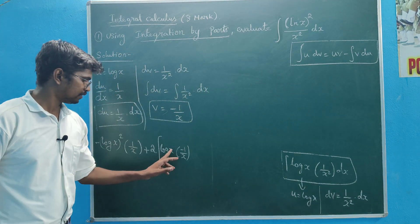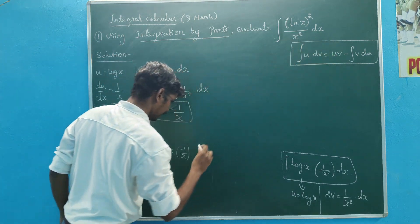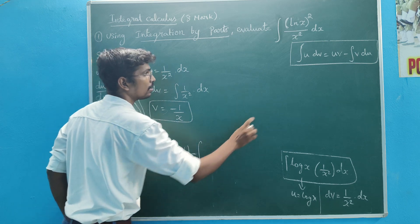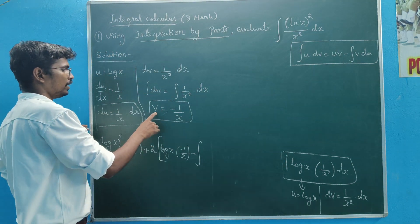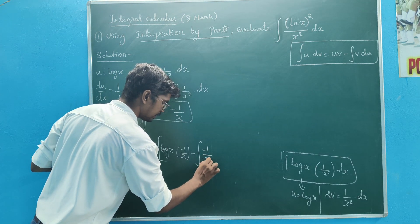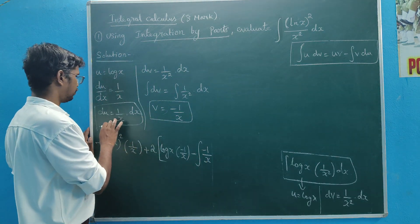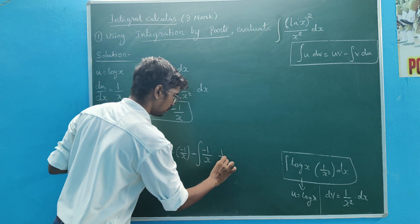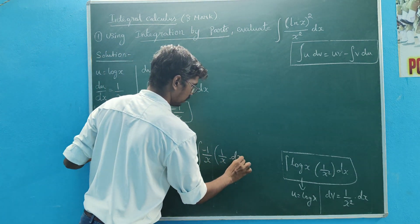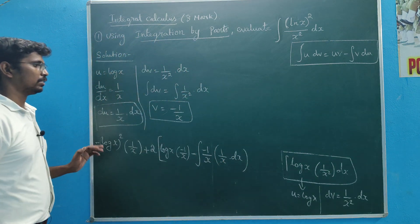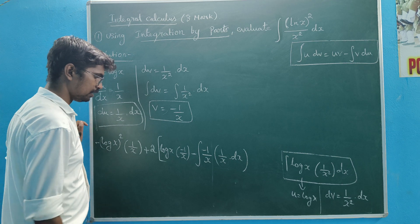1 by x. Log x into 1 by x. Add: minus integral of minus integral. Add the v du. v in the end is minus 1 by x into du. du is given by 1 by x into 1 by x. So 1 by x into dx.